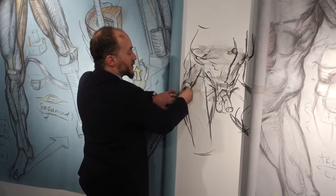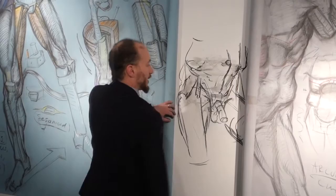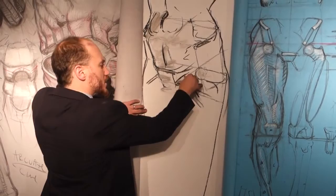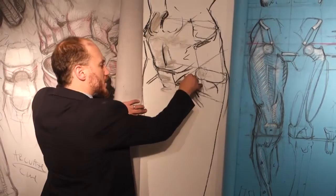Which is the tensor fasciae latae and the sartorius. The brevis is going to run that way into the femur, and the longus is going to run that way into the femur — so we get this crisscross. And then the gluteus maximus comes down like this.